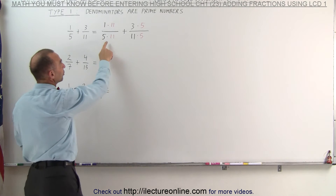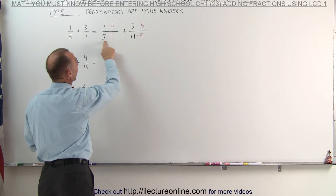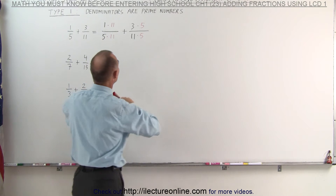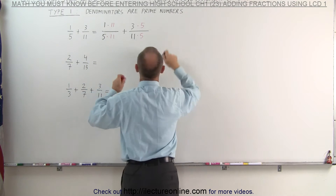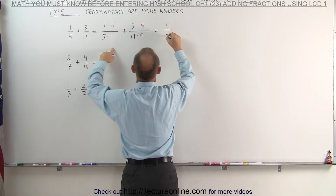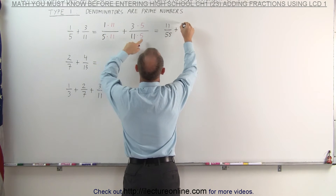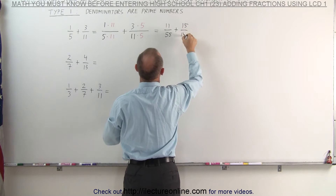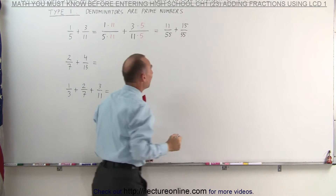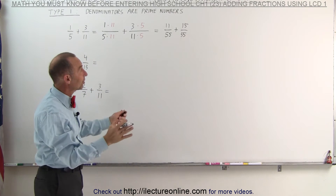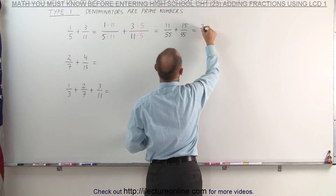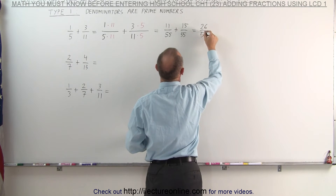Also notice that now both denominators are the same. 5 times 11 is 55, and 11 times 5 is 55. So this becomes as follows. This is equal to 1 times 11, which is 11, over 55, plus 15 divided by 55. Now, since the denominators are the same, we can simply add the numerators. This becomes 26 divided by 55.